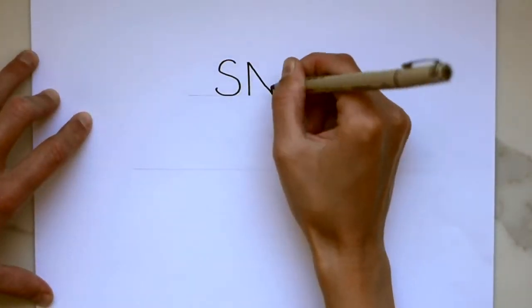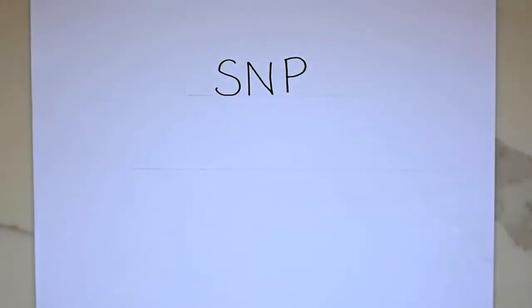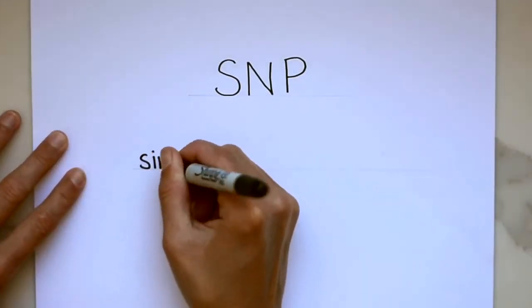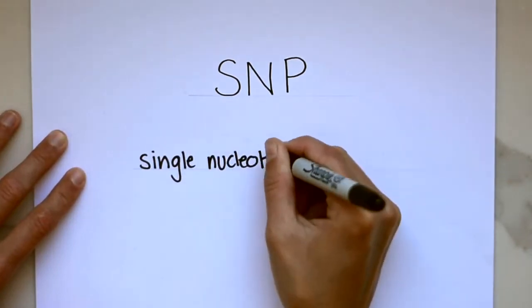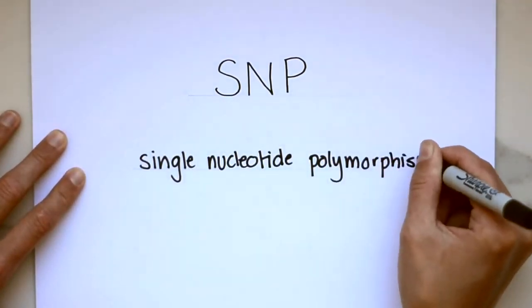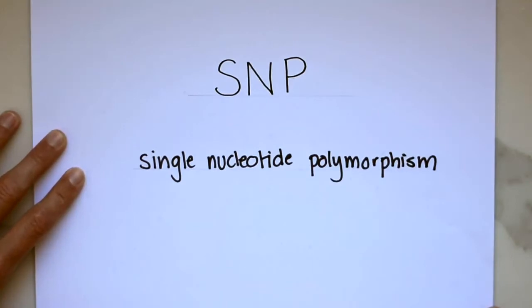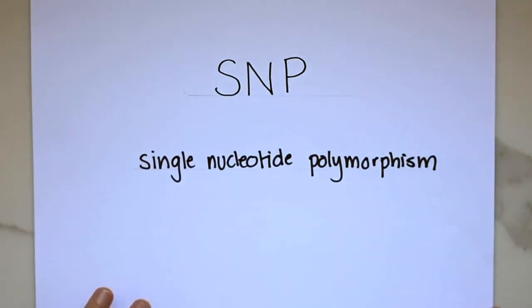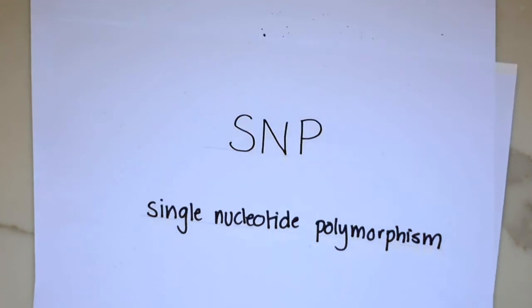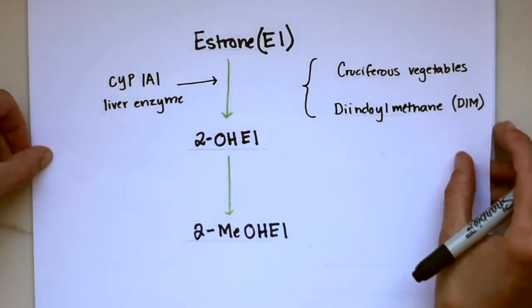The other thing we would take into consideration is if the individual has any SNPs. Now SNP, S-N-P, stands for Single Nucleotide Polymorphism, which is a DNA sequence variation that occurs when one nucleotide, which is kind of this building block in the genome sequence, is modified. Now delving into SNPs and explaining SNPs, it's a huge topic and we won't be able to address it in this video. However, it should be stated that a SNP doesn't necessarily cause disease, but it can affect an individual's estrogen metabolism.